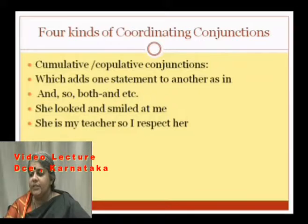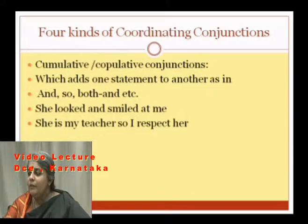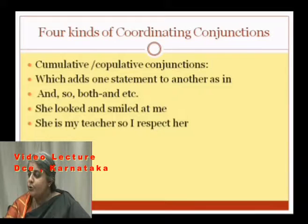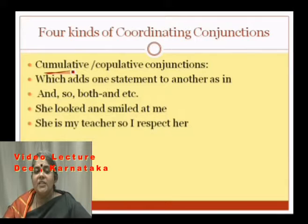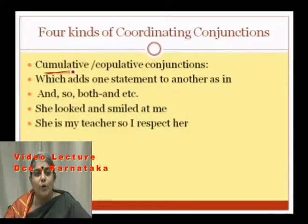There are four kinds of coordinating conjunctions. The first kind is cumulative or copulative conjunctions. The function of a cumulative conjunction is to add one statement to another — it adds one statement to the existing statement, giving extra information. Conjunctions used: and, so, both, both/and.